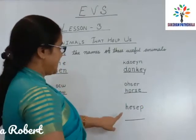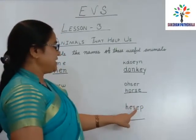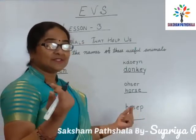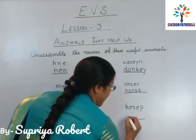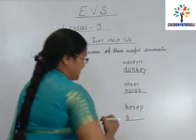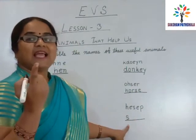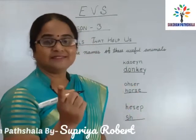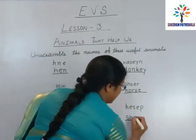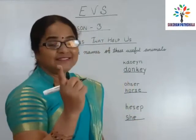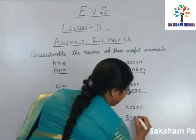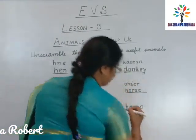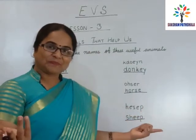Now here — H, S, E, P. What will I write? First letter S, then H, then E, then P. Sheep. Very good.